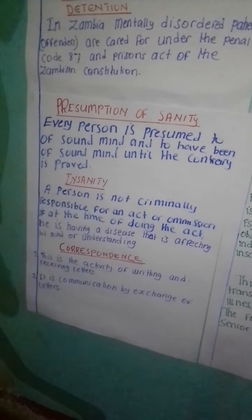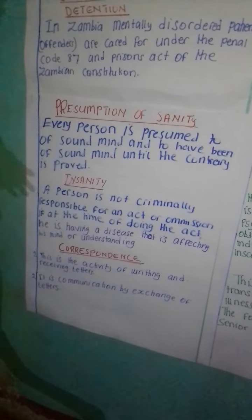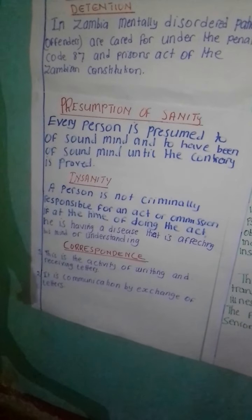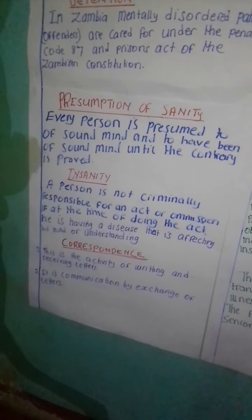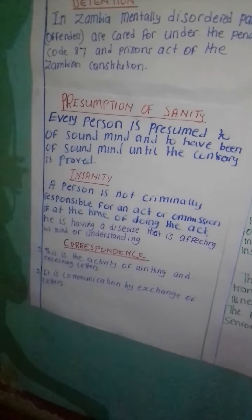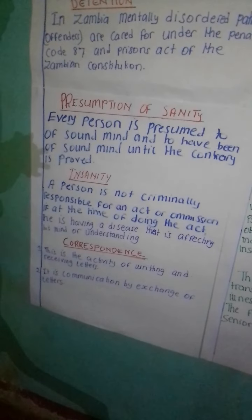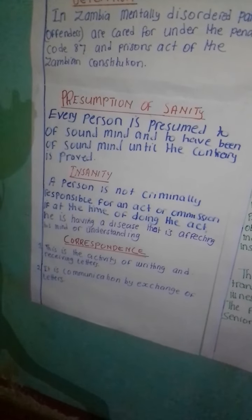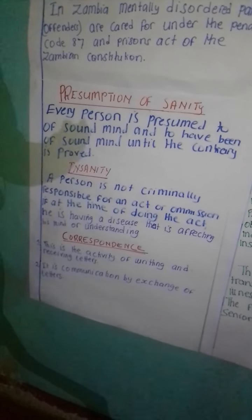Then we have insanity. Under insanity, a person is not criminally responsible for an act or omission if, at the time of doing the act, he or she is having a disease that is affecting his or her mind or understanding.